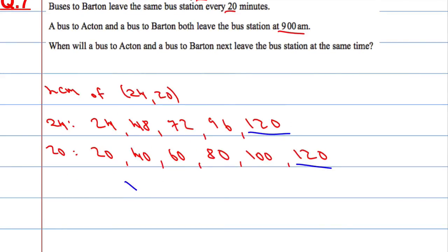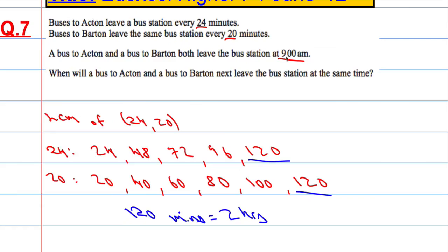Now 120 minutes is 2 hours, so if they first left the station at 9am, that means they'll both leave again in 2 hours time.